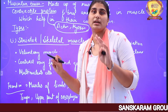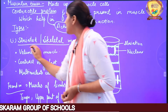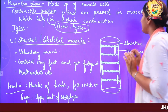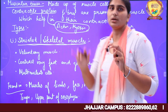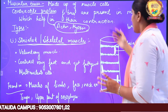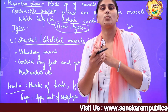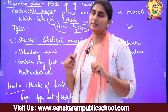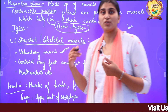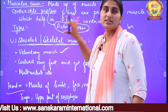Muscle cells are divided into 3 broad categories based on their structure and function. The first is striated or skeletal muscles. 'Striated' comes from 'striations', meaning bands — when you observe these muscles, you can see light and dark bands on them, giving a striated appearance. They are called skeletal muscles because they are attached to the skeleton and help in bone movement. These are voluntary muscles, meaning they are under our control — they move when we want them to, otherwise they don't.